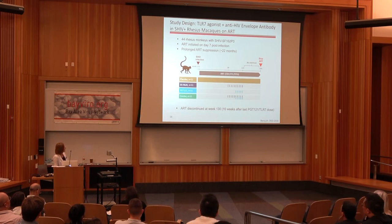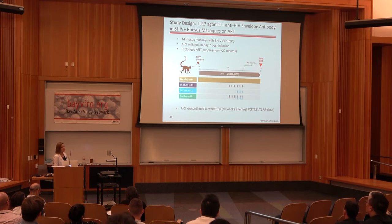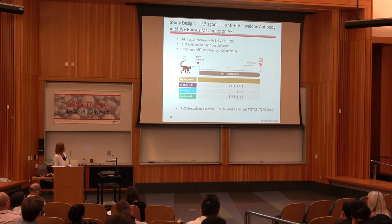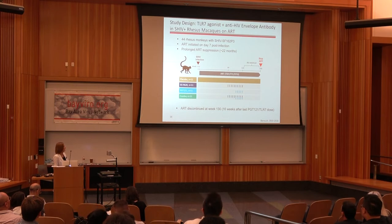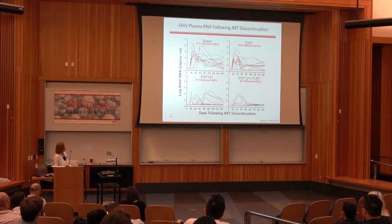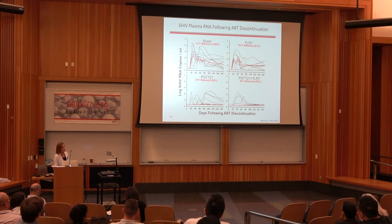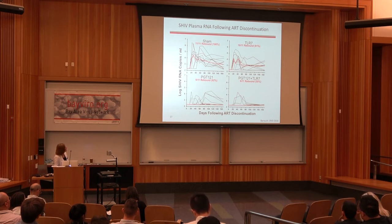One important distinction is that we introduced an antibody washout period. That's important because the antibody itself can act as a direct-acting antiviral, and so if the virus rebounds when we stop ART, we wouldn't know if we cured the animals or if it's just the effect of the antibody as a DAA. So we wanted to make sure antibody levels were below therapeutic levels before we released ART, to really ask whether this antibody did something during the aviremic phase. Our sham-treated animals — 11 out of 11 — eventually rebounded with peak viremia and settled at these set points.